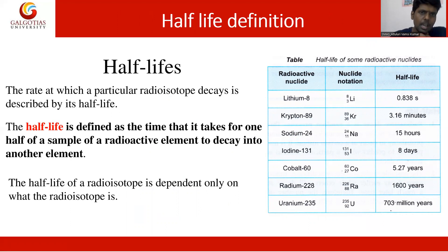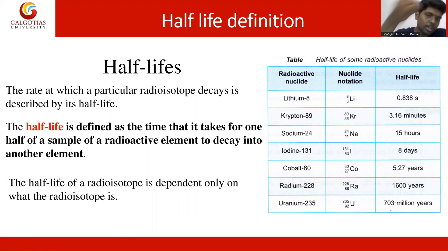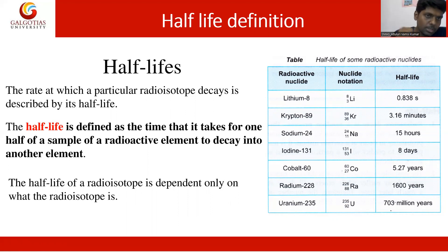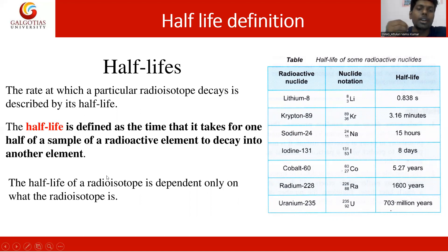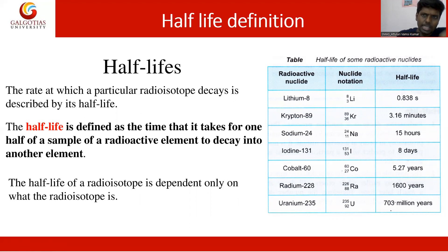The third concept is half-life. Half-life is the rate at which a particular radioisotope decays. It is the time period it takes for an atom to release a particular component — which can be a neutron, electron, or proton. The formal definition: half-life is the time it takes for one half of a sample of a radioactive element to decay into another element. The half-life of a radioisotope depends only on the type of radioisotope — larger radioisotopes have longer half-lives, while smaller atoms have shorter half-lives.